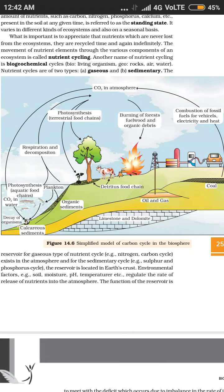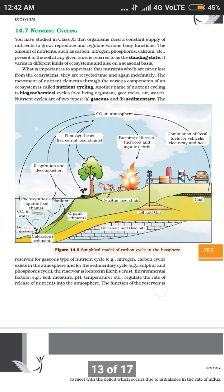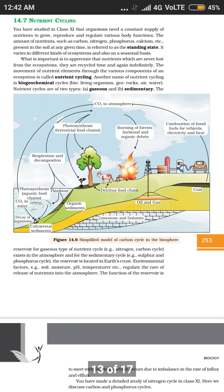Good morning students. We'll be starting with our next topic, that is nutrient cycling. In class 11th we have studied about different nutrients, their role in plants, and their role in animals or the human body. Whatever is present in the living system will go into the ecosystem — whatever is in the animal or plant, the living system, it will go into the environment.